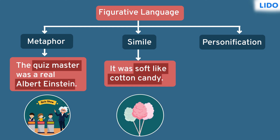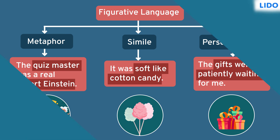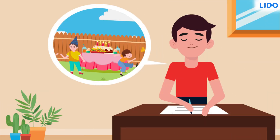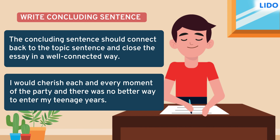A simile compares two things or people by using the words like and as. Next up is personification, which means to give human qualities to animals and objects. For example, time flew by before we knew. Raj is almost done with his descriptive essay. The last part of descriptive writing is the conclusion which gives closure, just like what Raj has done here.